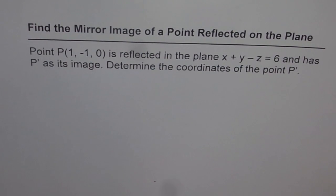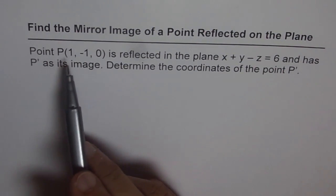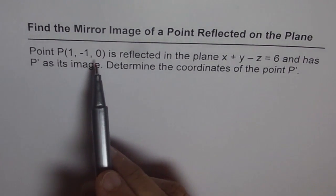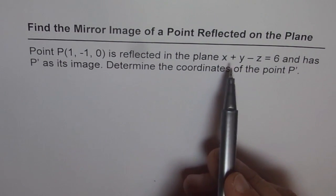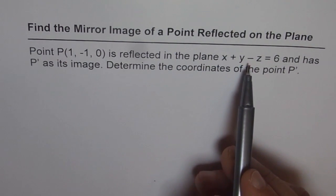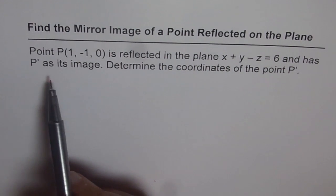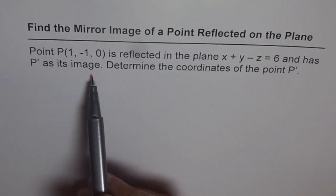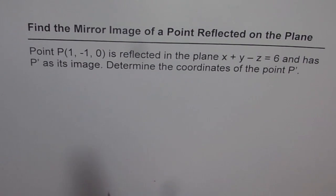Find the mirror image of a point reflected on a plane. Point P is reflected in the plane x plus y minus z equals 6 and has P dash as its image. Determine the coordinates of point P dash.